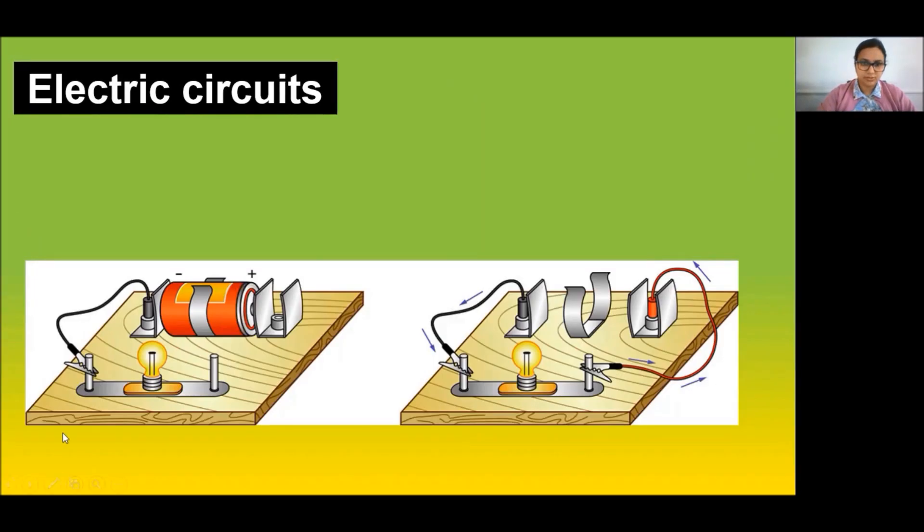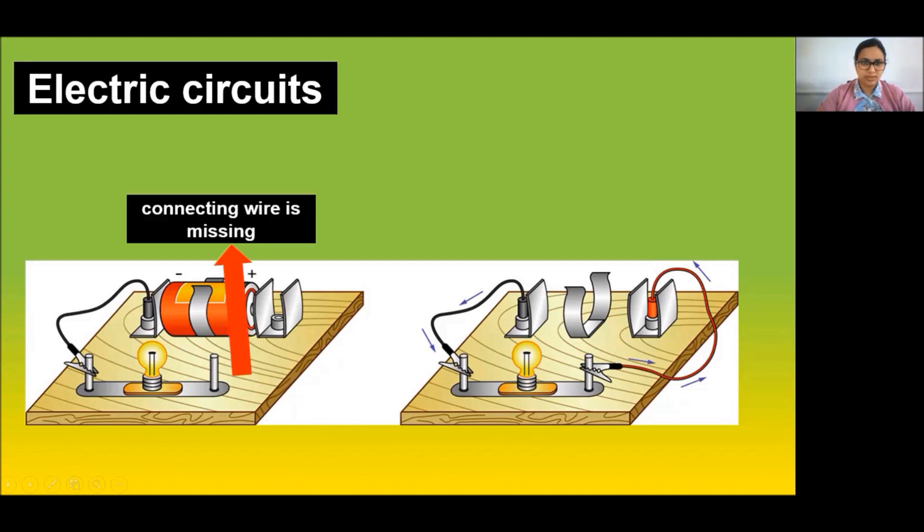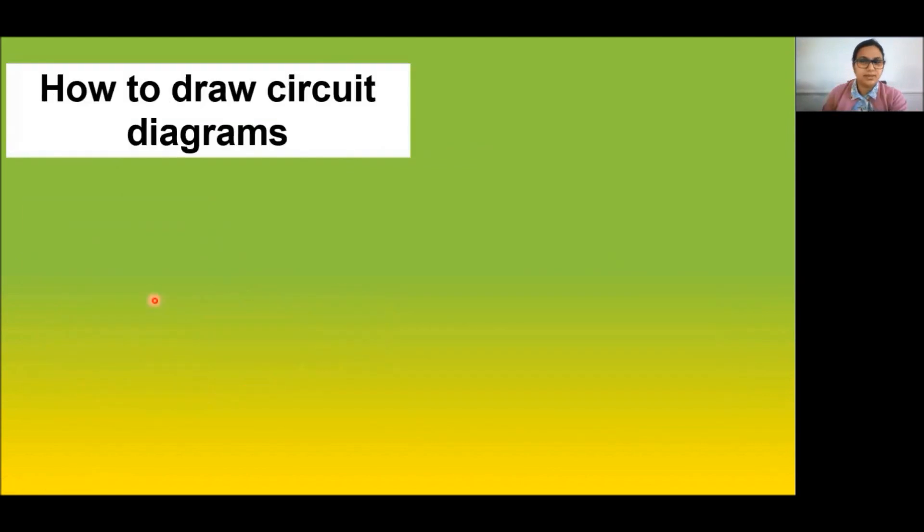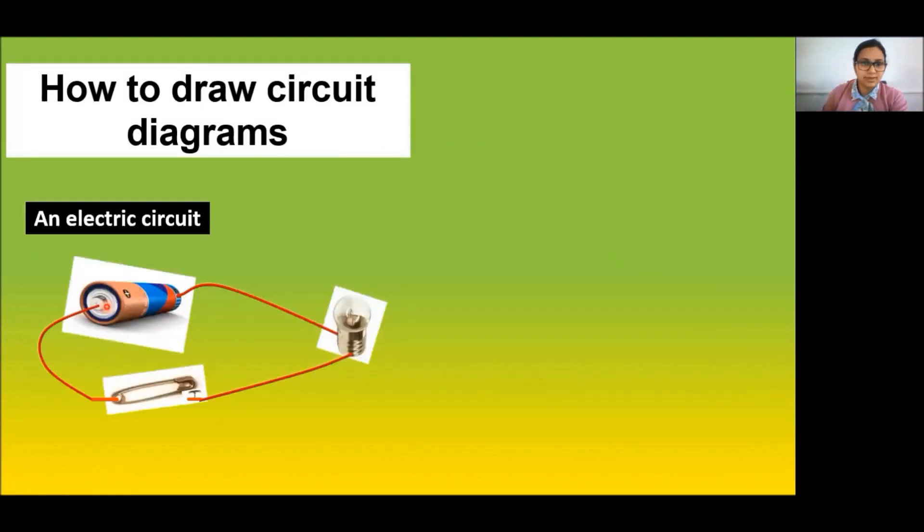So look at these two circuit diagrams. Something is missing in these two, right? What is that? Let us find out. Here the connecting wire is missing. What about here? A source of electrical energy or a battery is missing. Such circuits are called open circuits.